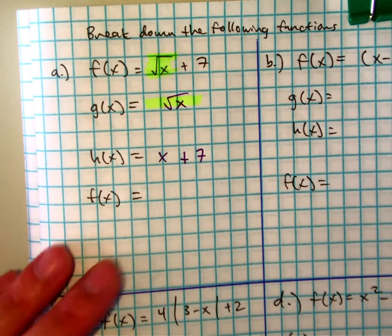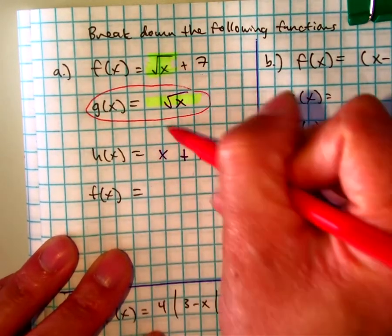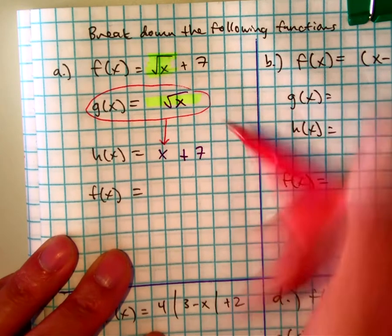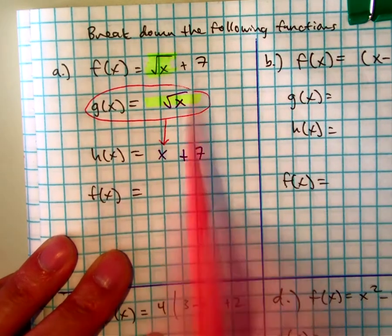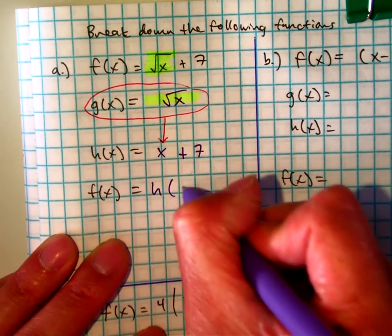So this should be a visual review of what we've done. You're basically taking g of x, and you're putting it into this to get f of x. So what is our final result? h of g of x.